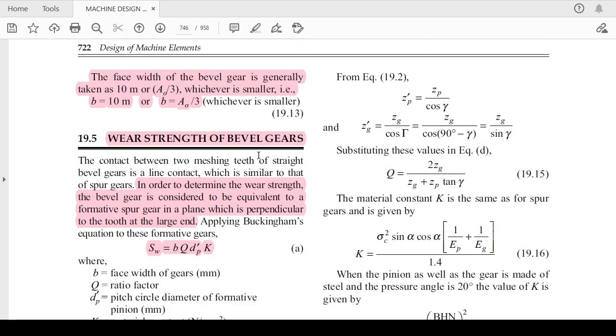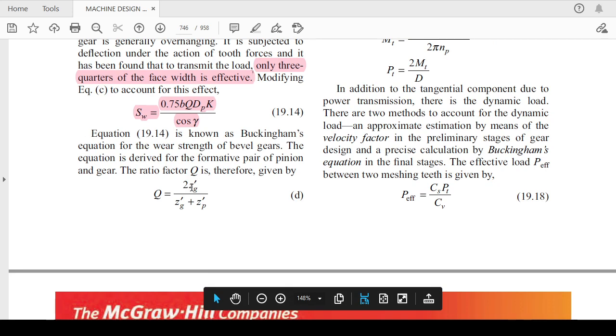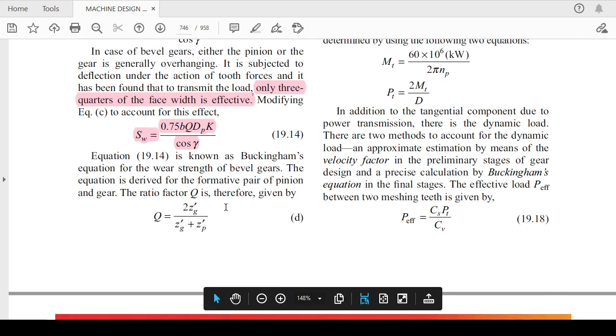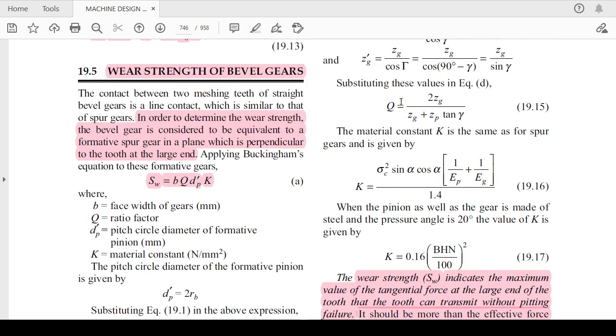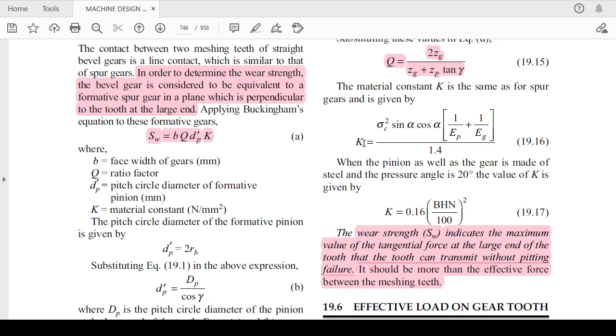Q you can calculate with the help of number of formative teeth: 2 Z_g dash divided by Z_g dash plus Z_p dash, and it can also be rewritten as 2 times Z_g divided by Z_g plus Z_p tan gamma. This formula you can fetch up from your design data book.